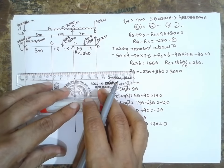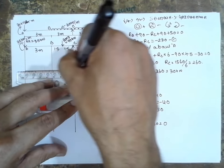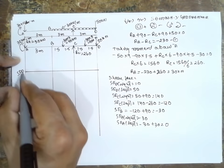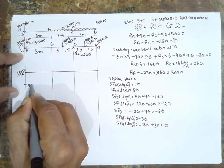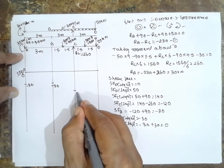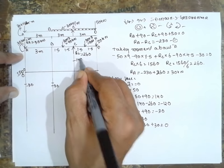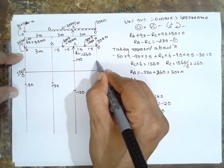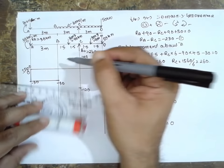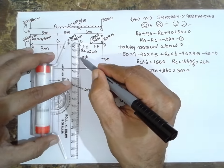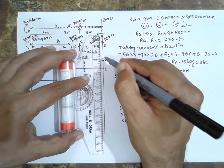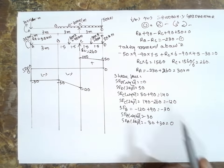Drawing the shear force diagram: SF at D is 0. From D moving left, the value drops to minus 50. At A the value is 0, and going along we have minus 30 at A and B. At C there are two values: minus 120 and plus 140. At D we have 50 and 0. The regions are positive, negative, and negative as marked. Now going for the bending moment diagram.